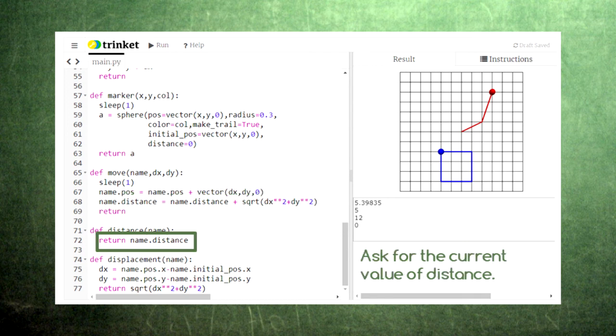When we want to retrieve the distance the marker has traveled, the distance function simply retrieves the most up-to-date value.